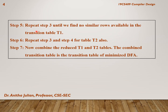In step 5 we will repeat this process to find all the similar rows in table T1, and then do the same for table T2. In step 6, once we obtain T1 and T2, we combine both tables and the combined table will be the transition table for the minimized DFA. Don't confuse yourselves — we will take a simple example, and as we go through it we will understand this algorithm much better.